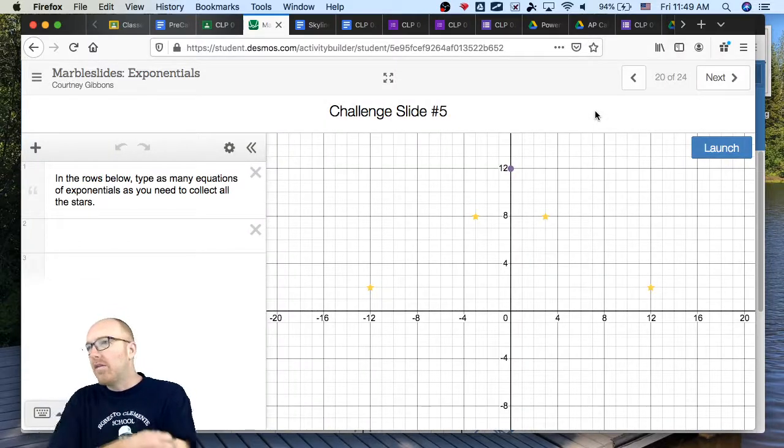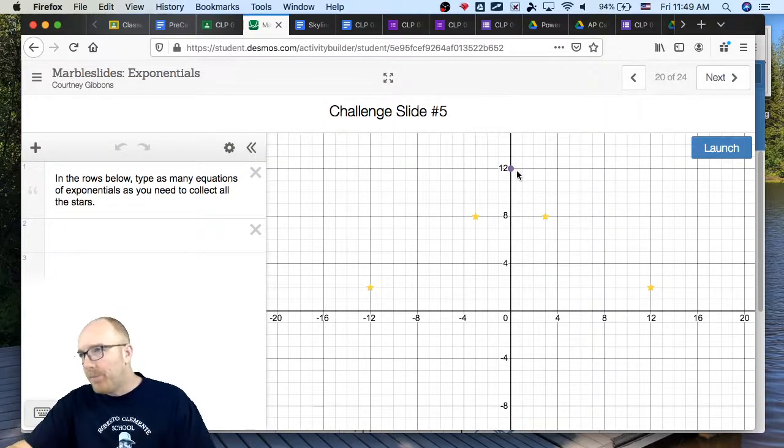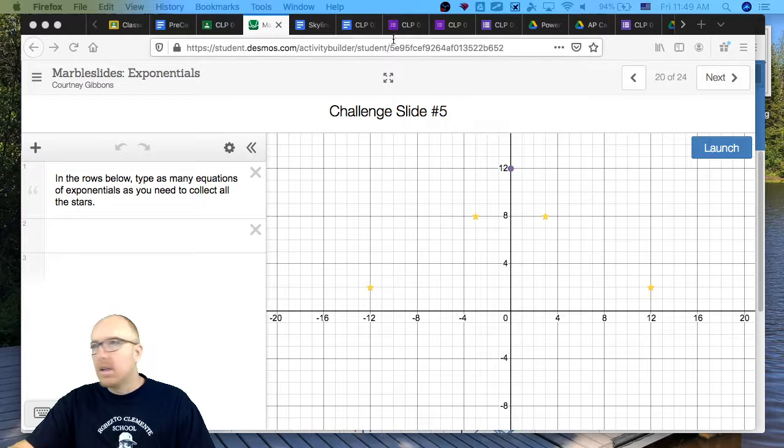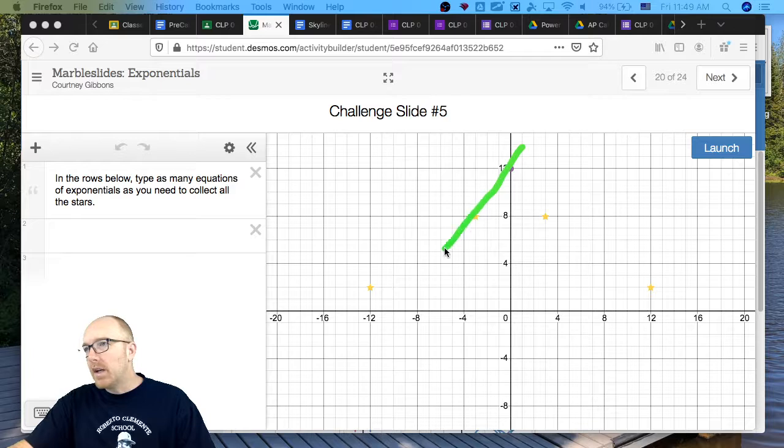Let's go on to number five. Number five was giving people some trouble as well. So you can do something similar. You can have it come down. Let's see if that'll work. I saw some pretty creative ones. People took and they came up with an exponential this way. And they did another one this way.